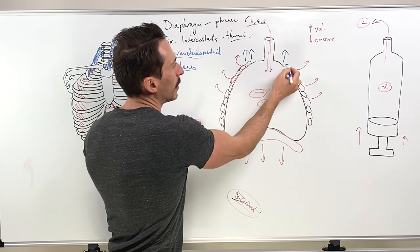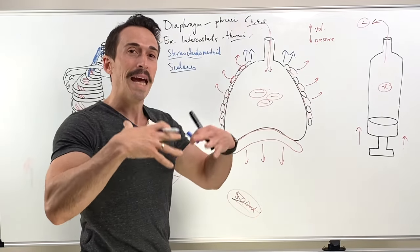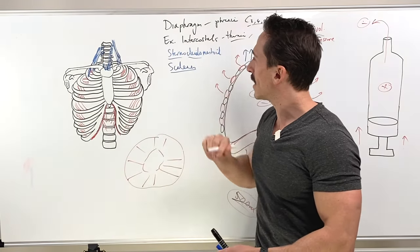So what do you think happens when the scalenes contract? Again, lifts the ribs up, increasing thoracic volume. So that's the scalenes.